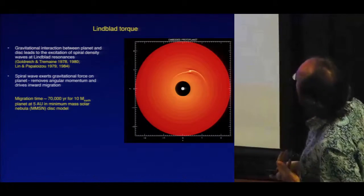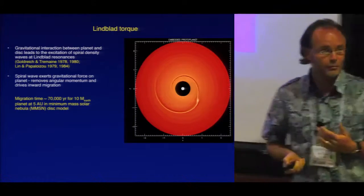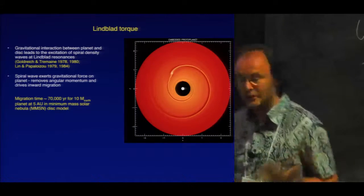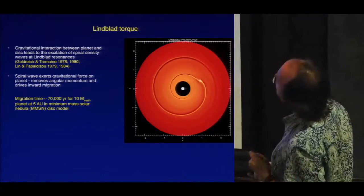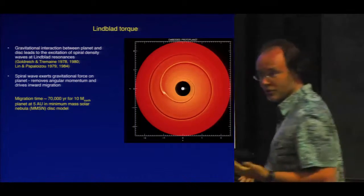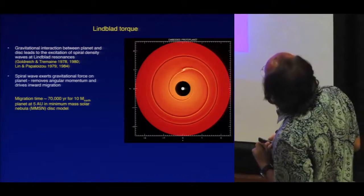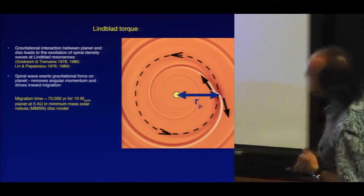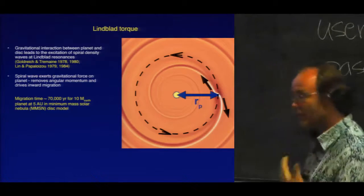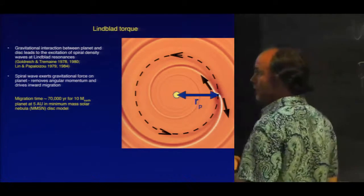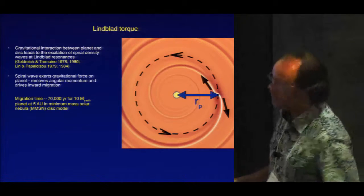If you put a planet in a protoplanetary disk and run a simulation, the first thing you'll notice is the formation of spiral waves. These are spiral waves excited at locations in the disk called Lindblad resonances. If you think about the gravitational interaction between the spiral wave and the planet, you realize very quickly that this spiral wave exerts torques on the planet which try to change its angular momentum.